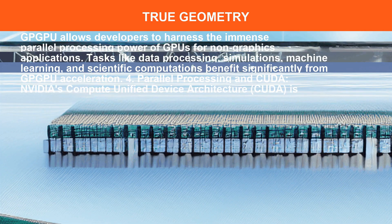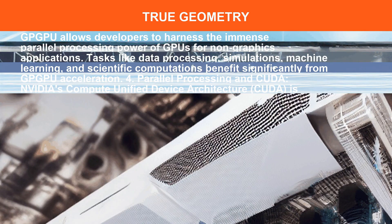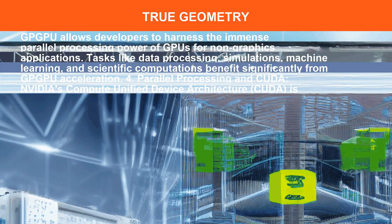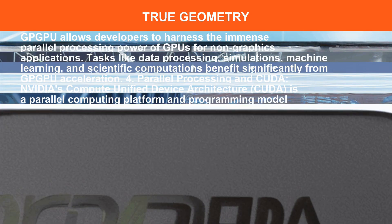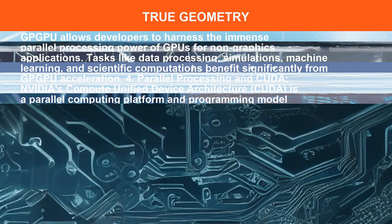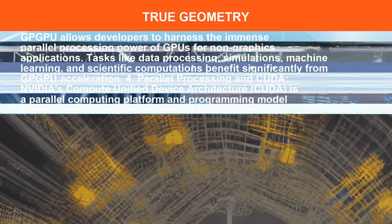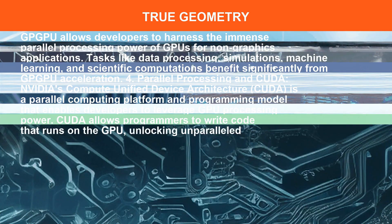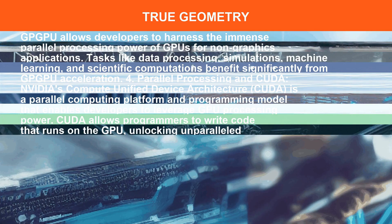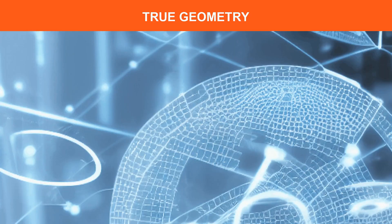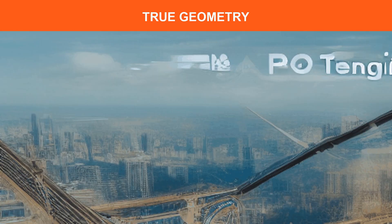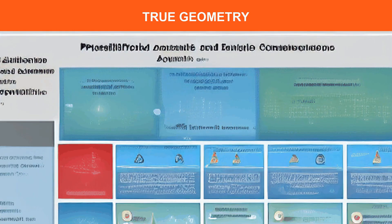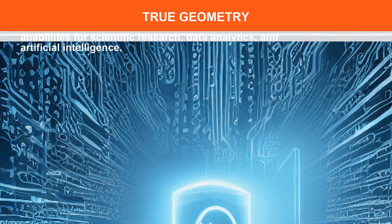Parallel processing in CUDA — NVIDIA's Compute Unified Device Architecture — allows programmers to write code with capabilities for scientific research, data analytics, and artificial intelligence.